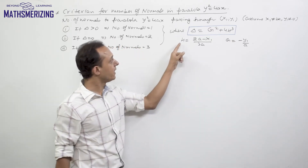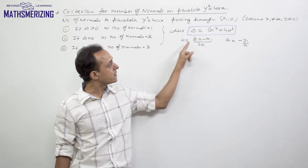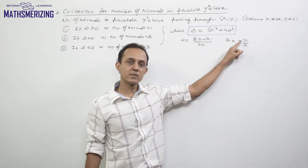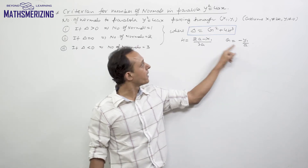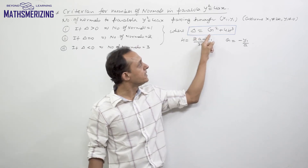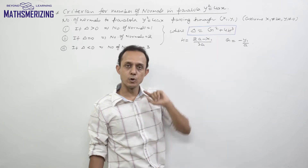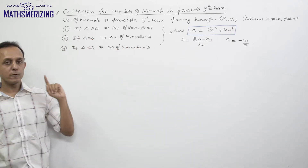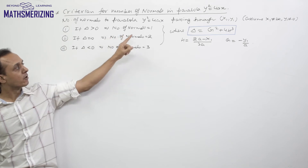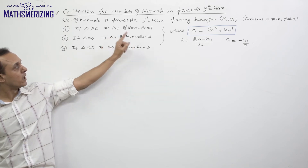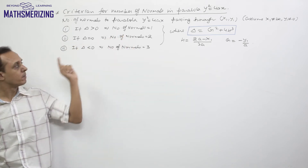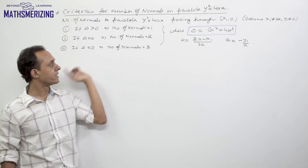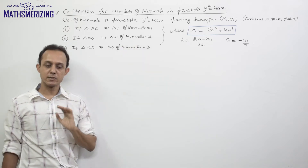We let h = (2a − x₁) / 3a and g = −y₁ / a, and define delta as g² + 4h³. If delta is greater than 0, the number of normals that can be drawn through that point is 1. If delta equals 0, the number of normals is 2, and if delta is less than 0, the number of normals is 3.